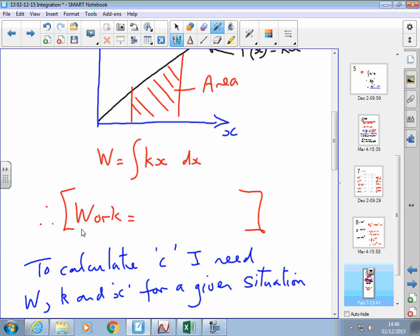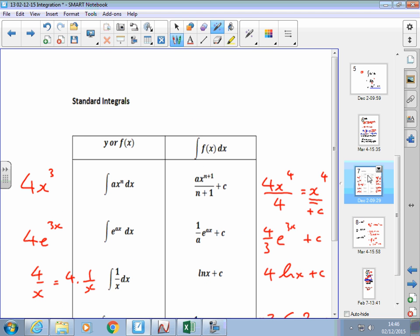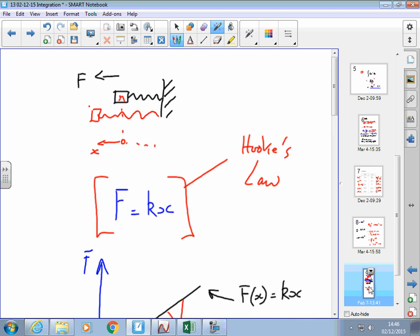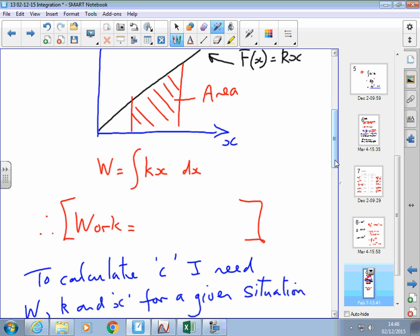What do we do? What does this tell us to do? Add 1 to the power and divide by the new power. So if we apply that to this, what's the power? So add 1 to the power and divide by the new power. kx squared over 2. Add 1 to the power and divide by the new power plus c.